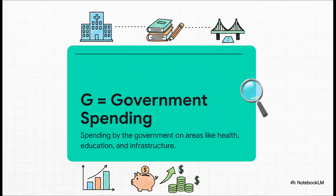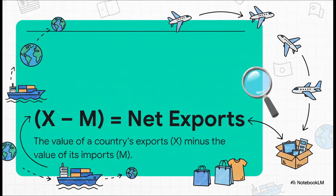Then you've got G for government spending. This is when the government itself acts like a huge consumer, buying everything from new highways and fighter jets to paying the salaries of teachers and firefighters. And finally, we have net exports. This part just balances out our trade with the rest of the world — we add up the value of everything we sell to other countries (our exports) and then subtract the value of everything we buy from them (our imports). Simple as that.